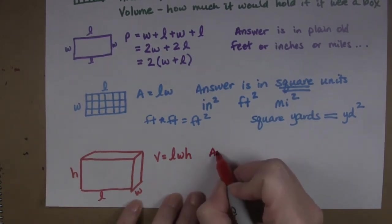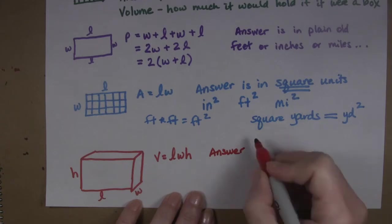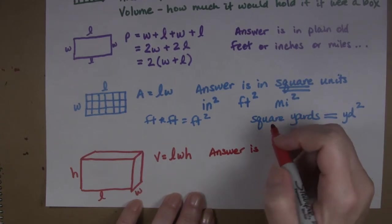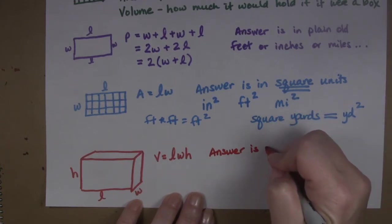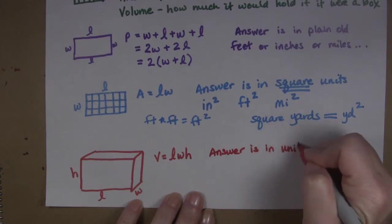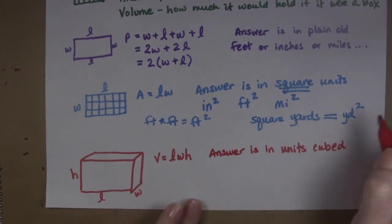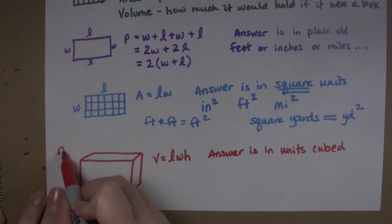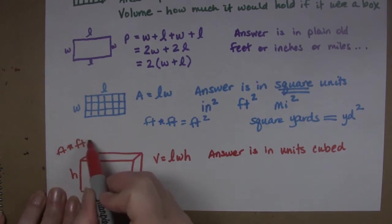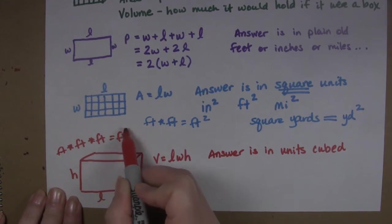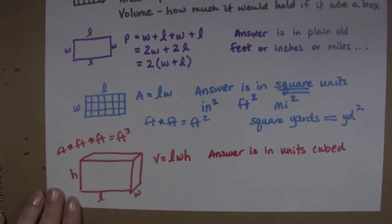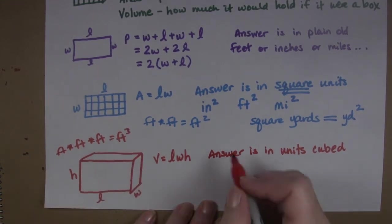So now what do you think your answer is going to come out to be? Well your answer is going to be in units cubed. So we have feet times feet times feet so that gives us cubic feet. So answer is going to be in units cubed.